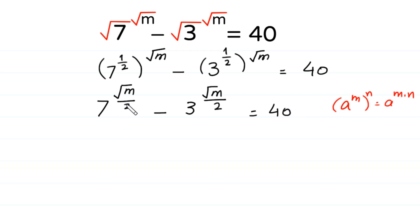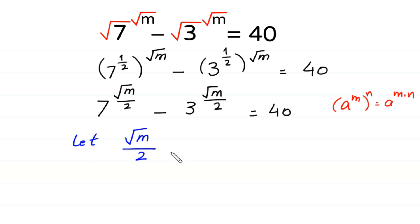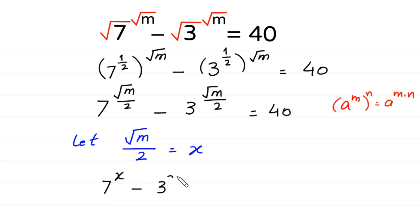Now, we have square root of m over 2 appearing in both terms. So we let square root of m over 2 equal x. Substituting this value, the equation becomes 7 to the power x minus 3 to the power x is equal to 40.